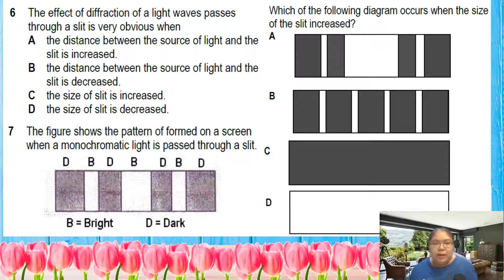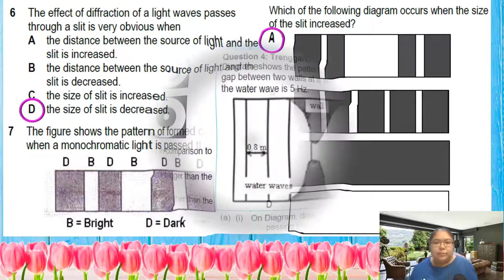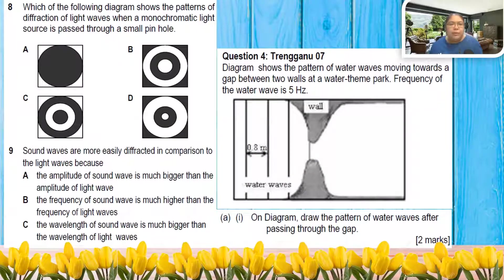Number seven: which one is the pattern when monochromatic light passes through a slit? A slit means diffraction. When the size of the slit increases, diffraction becomes less. So from here, the diffraction pattern should be A.